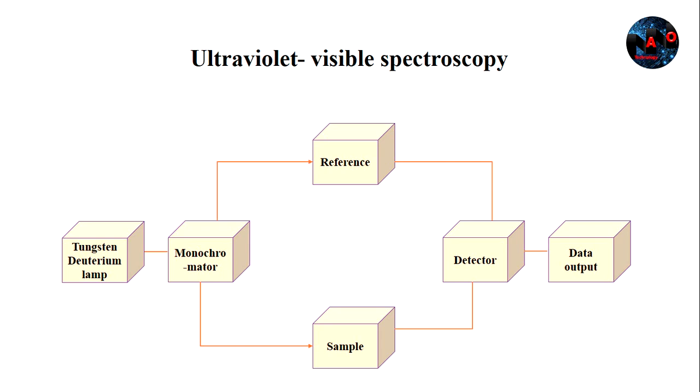Ultraviolet visible spectrum refers to the reflectance or absorbance spectra in the UV visible region. When the light beam is passed through the solution, a part of the light may be absorbed and the rest will be transmitted through the solution.